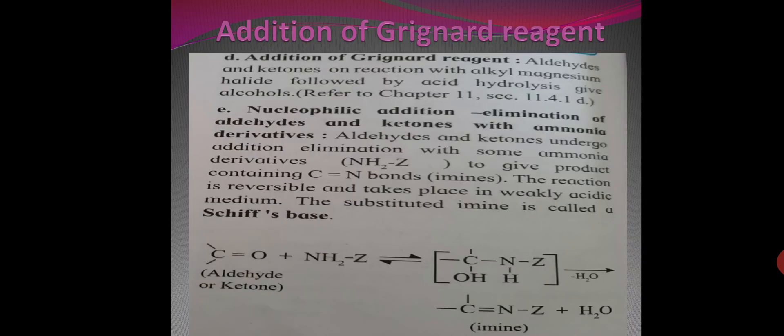Next is addition of Grignard reagent. Aldehydes and ketones react with alkyl magnesium halide followed by acid hydrolysis to give alcohols. Grignard reagent reacts with aldehyde or ketone to form an adduct which on hydrolysis with dilute acid gives corresponding alcohol. This reaction we have seen in last chapter on alcohols.